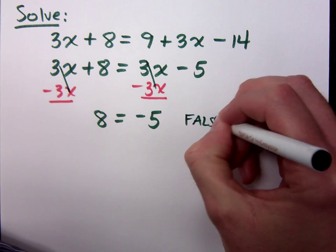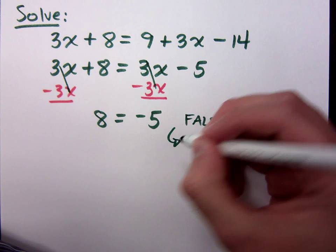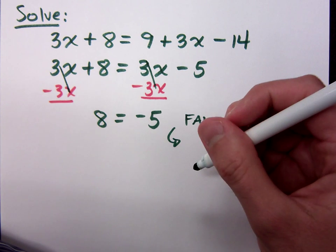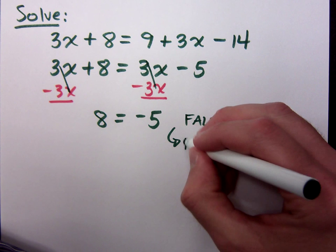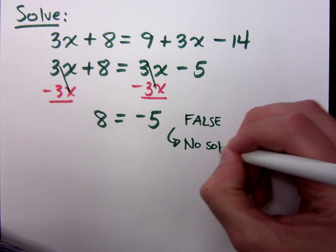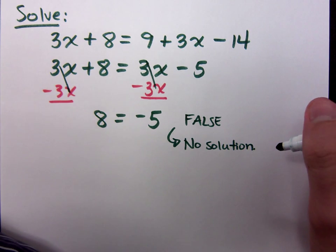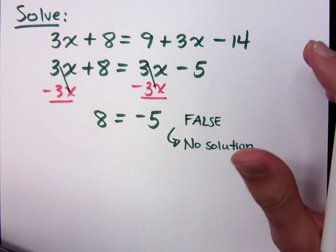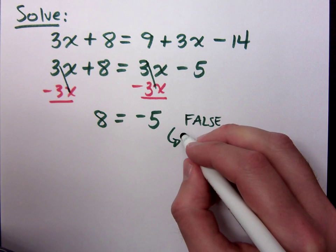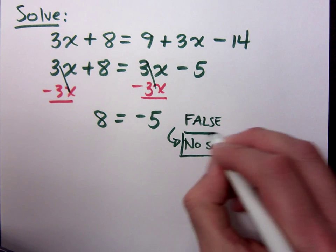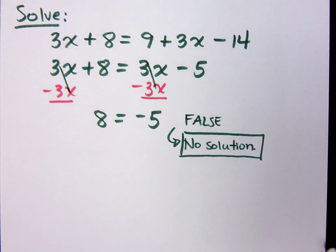Do you know what that means? Not true. Thank you, Captain Obvious. It's not true. We have a salute in the house. What this means for us, because we're trying to solve, we're trying to find solutions, we're trying to find replacements of the variable to make it true, that means that there is no solution. That means there's nothing that I could replace x with that's going to work. Nothing.